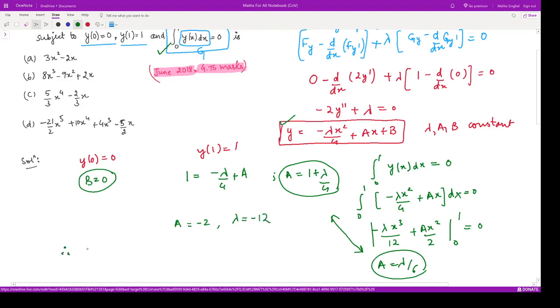Therefore, the extremal to the given functional is y = 3x² - 2x. So option A is the right answer.